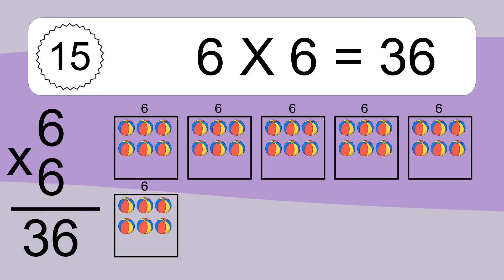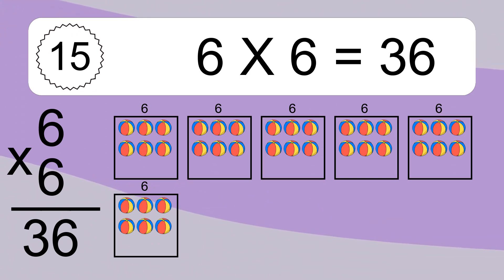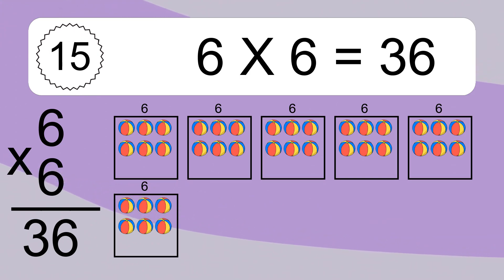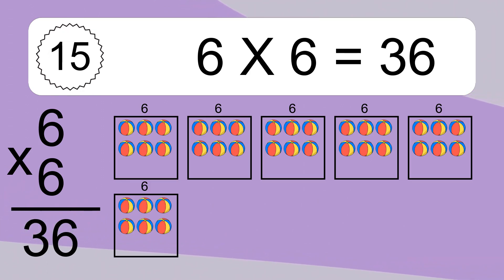We have 6 boxes, and each box has 6 colorful balls inside. If you count all the balls in all the boxes together, you will have 6 times 6 balls. This equals 36 balls.